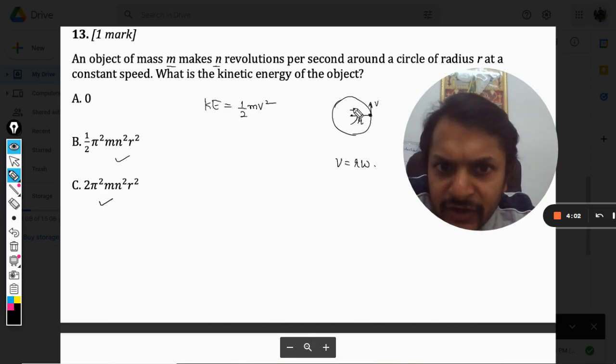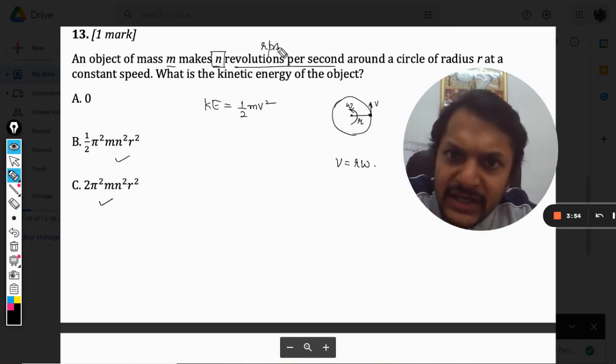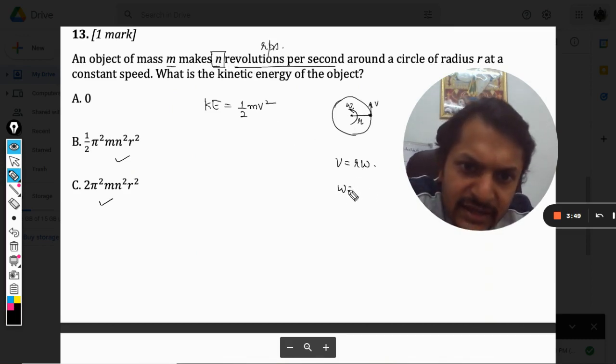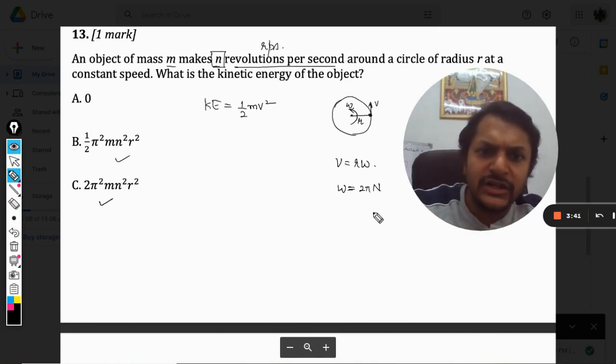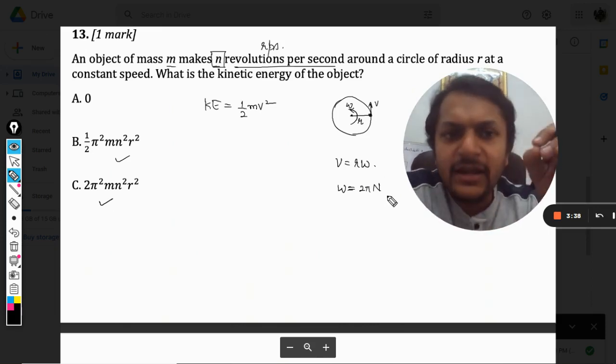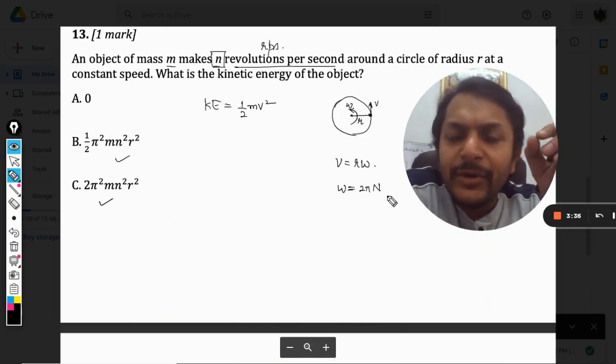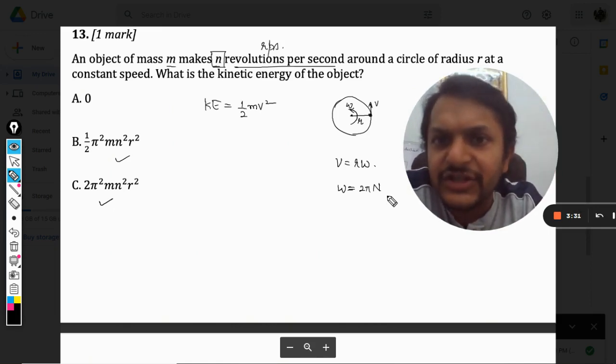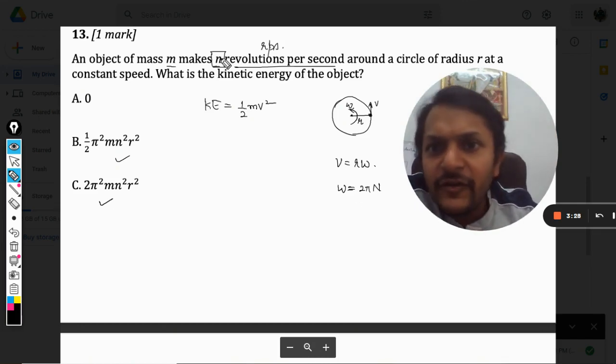Now because the question is giving us n revolutions per second, so it is rps, so we have to convert omega into rps. So omega, there is a formula, this omega is taken as 2 pi n by 60, or we don't need 60, just 2 pi n, because n is now given in per second already. So omega will be already in per second, so we need not divide it by 60. So omega is equal to 2 pi n.